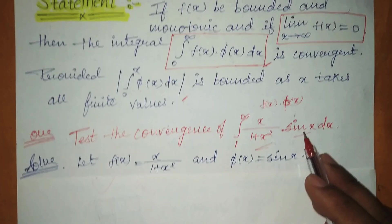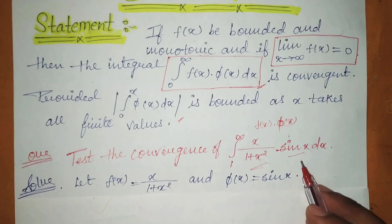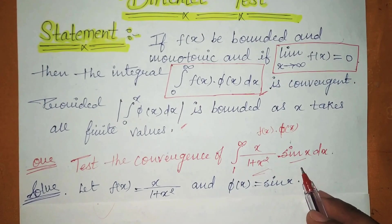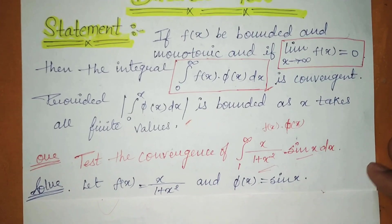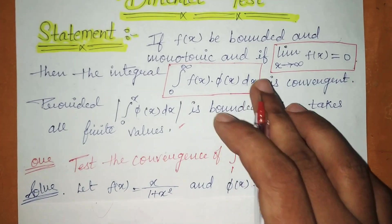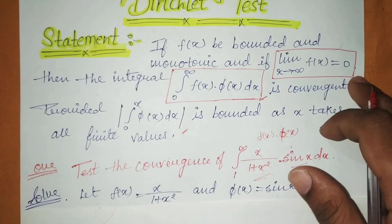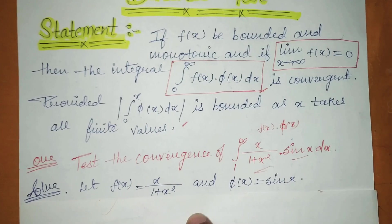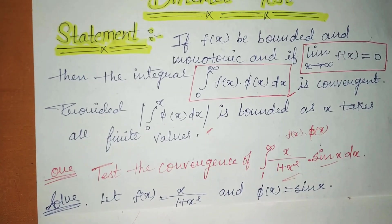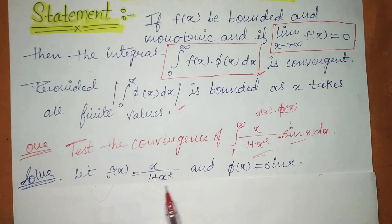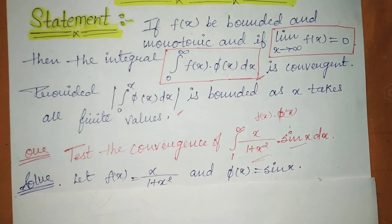We have to define which is fx and which is φx. How do you identify? The fx will be the one that is bounded and monotonic, and whose limit tends to 0. That is why we select fx here, and we take φx to be sinx.